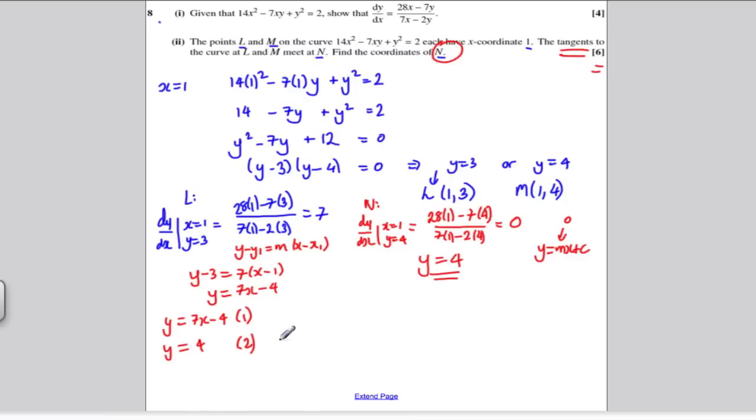Well, where do they meet? Substitute 4 in for y here. So I would get 4 = 7x - 4, and rearranging, adding 4 to both sides and dividing by 7, x must be, sorry, 8 divided by 7. So the coordinates of N are x = 8/7 and y = 4.